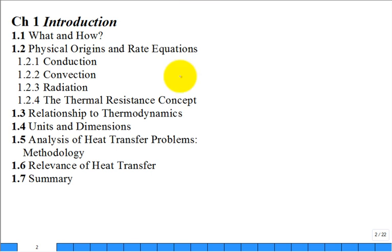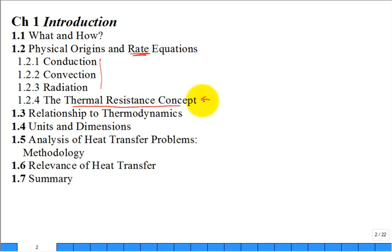We are going to review the three modes of heat transfer — conduction, convection, and thermal radiation. We'll look at the rate equations: Fourier's law, Newton's law of cooling, and Stefan-Boltzmann's law. Those describe numerically and quantitatively the rate of heat transfer. We'll build on the resistor concept in later chapters.